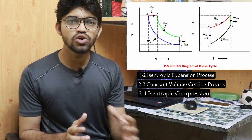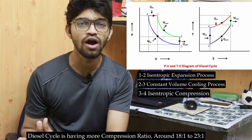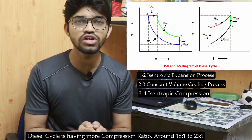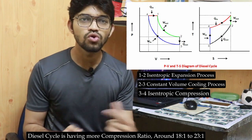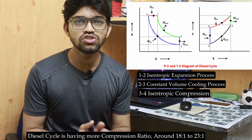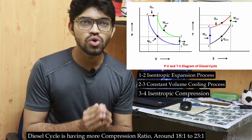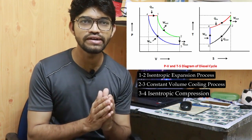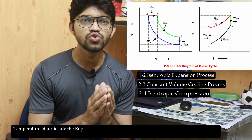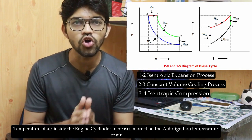In the diesel cycle, the compression ratio is higher than in any other cycle we have seen. The compression ratio in the diesel cycle is 18:1 or 23:1, compared to 12:1 or 14:1 in the Otto cycle. When the piston moves toward top dead center, it compresses the air such that the temperature increases tremendously, reaching above the auto-ignition temperature.